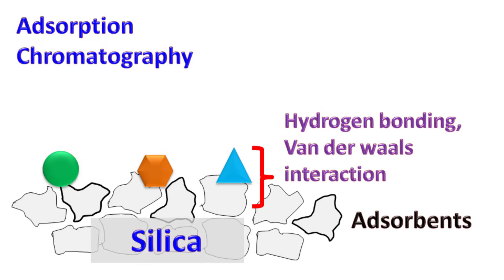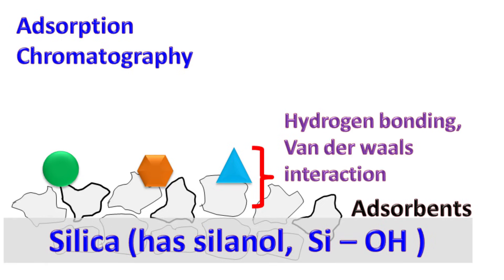One of the common adsorbents used in adsorption chromatography is silica. Silica has a SiOH functional group, also known as silanol. The SiOH group interacts with other functional groups of the sample molecules.